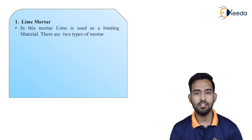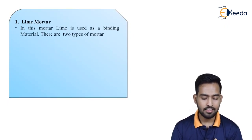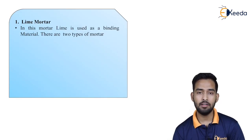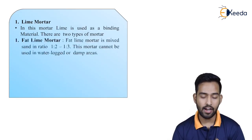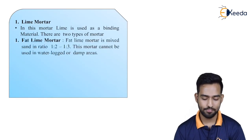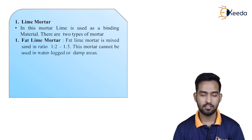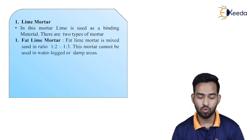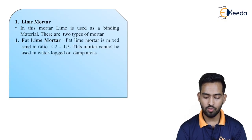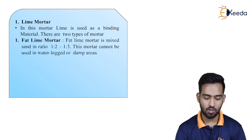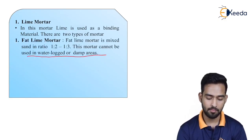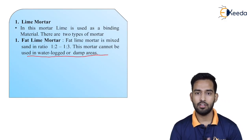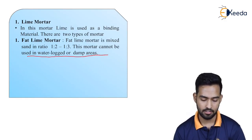Now, what is lime mortar? In this, lime is used as a binding material. There are two types: first is fat lime mortar, which is mixed with sand in the ratio of 1:2 to 1:3. This mortar cannot be used in waterlogged or damp areas.